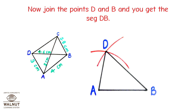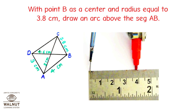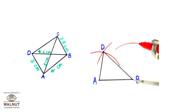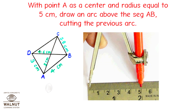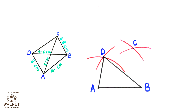Let's start with the second one. With point B as center and radius equal to 3.8 cm, draw an arc above segment AB. With point A as center and radius equal to 5 cm, draw an arc above segment AB cutting the previous arc. Name that point as point C.